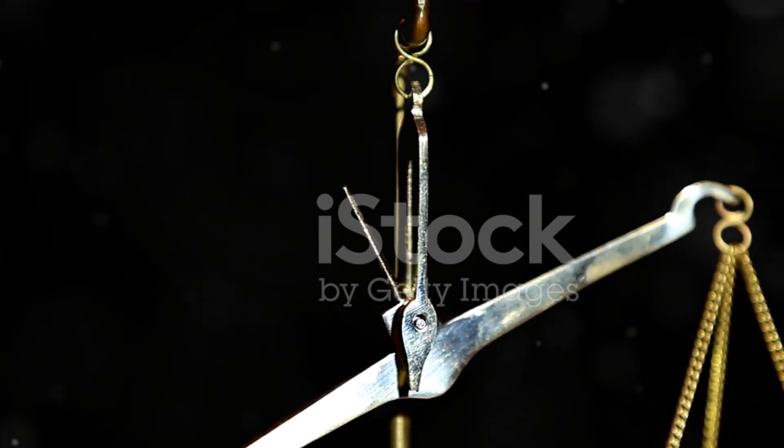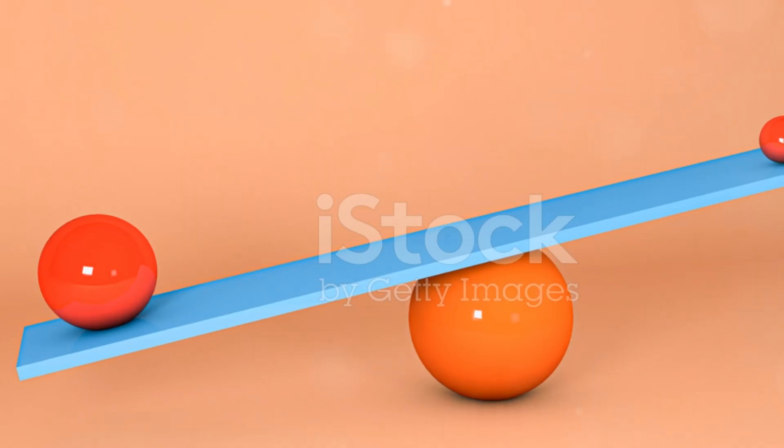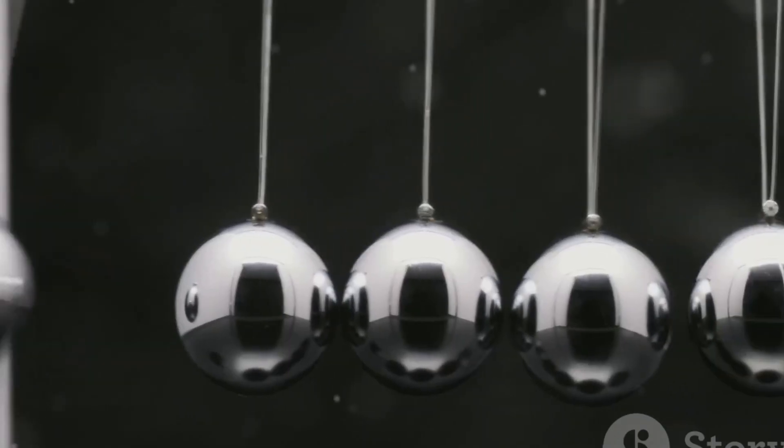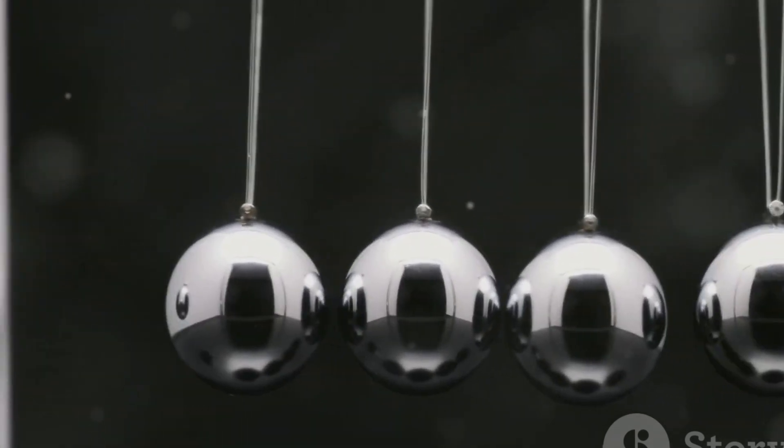Picture a seesaw, a simple bar that pivots at a fixed point known as the fulcrum. When the fulcrum is at the center, the force needed to lift the weight on one end equals the weight itself.